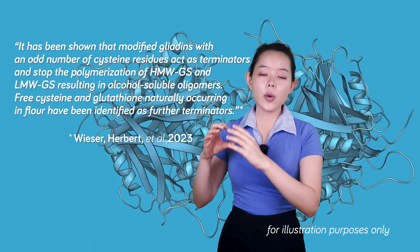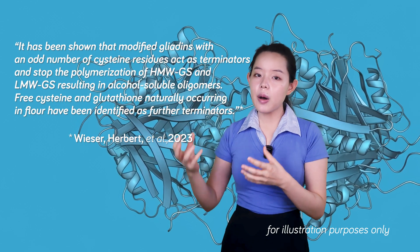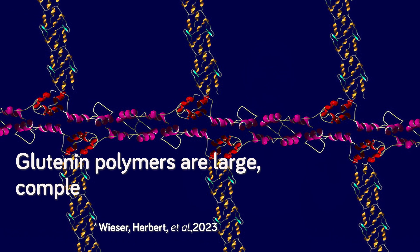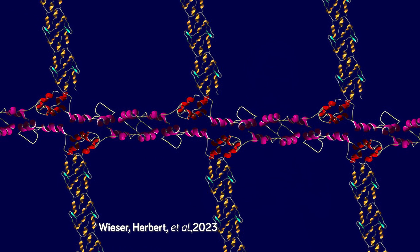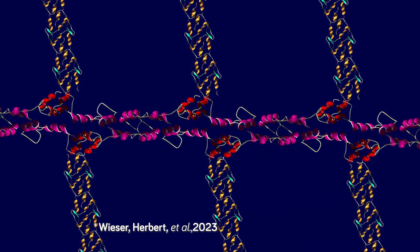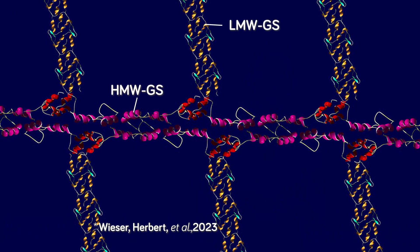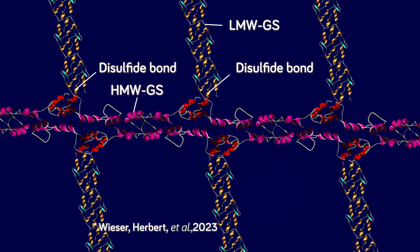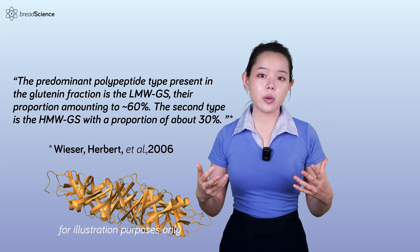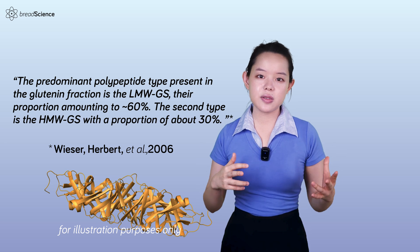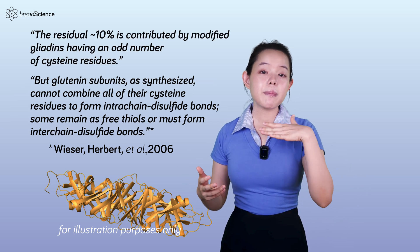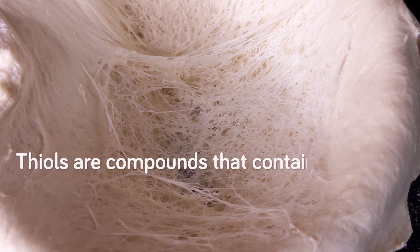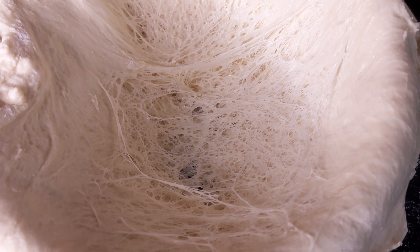These oligomers are formed by inter-chain disulfide bonds between modified gliadins and glutenin subunits. Glutenin polymers are large, complex protein structures found in wheat. These polymers are formed by two types of subunits — high-molecular weight glutenin subunits and low-molecular weight glutenin subunits — which are cross-linked by intermolecular disulfide bonds. High-molecular weight and low-molecular weight glutenin subunits make up about 30% and 60% of the glutenin polymer respectively, while the remaining 10% is contributed by chain-terminator proteins and thiols. Thiols are compounds that contain sulfhydryl groups, and these groups are vital for forming the gluten network.